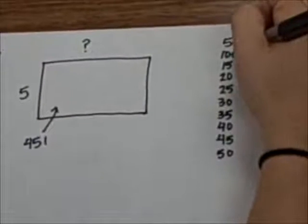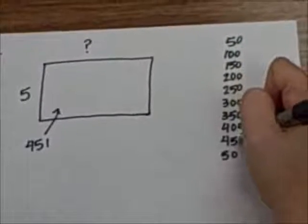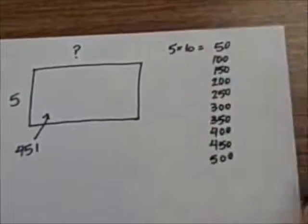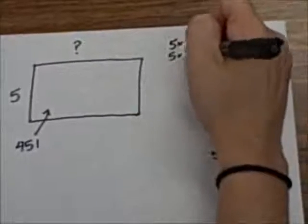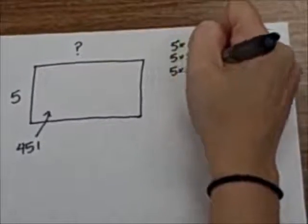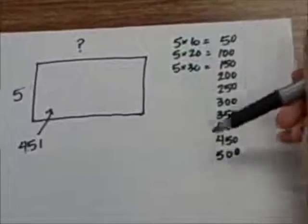But if I add a 0 to all of these, I'll get closer to 450. But that changes what I'm multiplying by. Now this is 5 times 10 is 50, 5 times 20 is 100, 5 times 30 is 150, and so on.